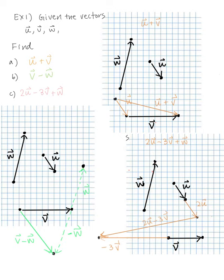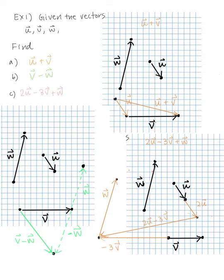Now I need to add W to 2U minus 3V. Starting from the terminal point of 2U minus 3V as the initial point, I draw the same vector W going upward. So 2U minus 3V plus W is this vector here, labeled 2U minus 3V plus W.